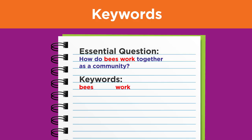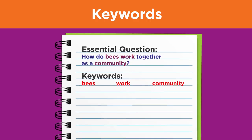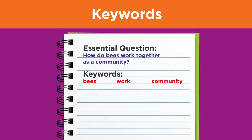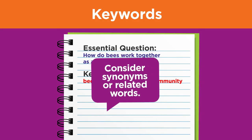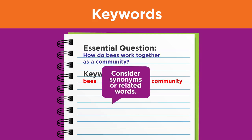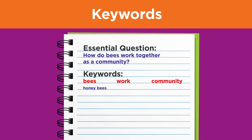Finding the keywords in your question is just the beginning. Let's look at a few ways to brainstorm more keywords. First, consider synonyms or words that relate to your main idea words. For bees, we could add honeybees, pollinators, and mason bees. For work, we can add roles and jobs. And for community, we can add colony, hive, interdependence, habitat, and social.